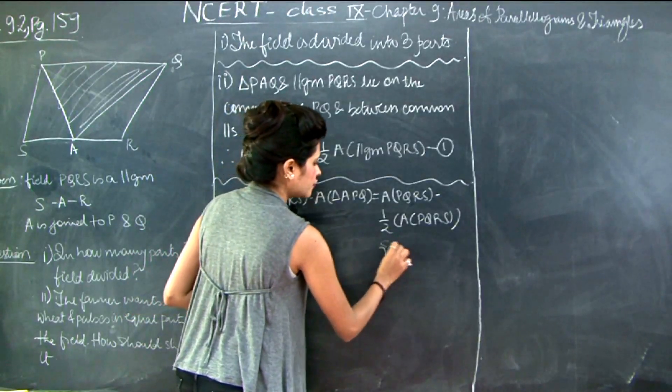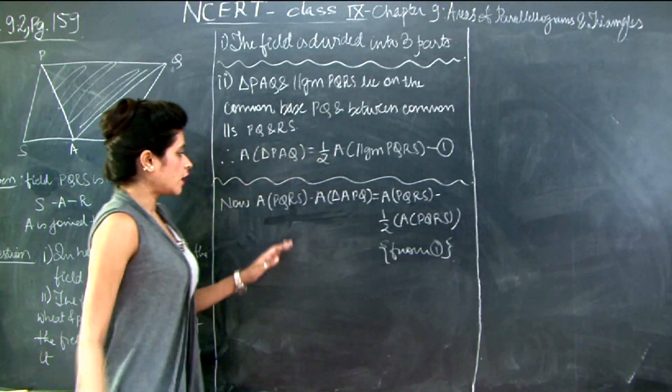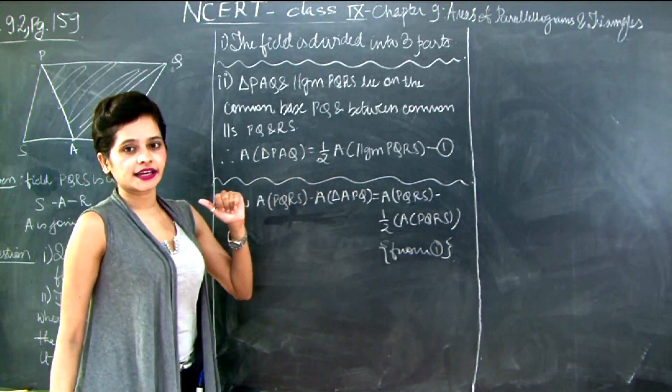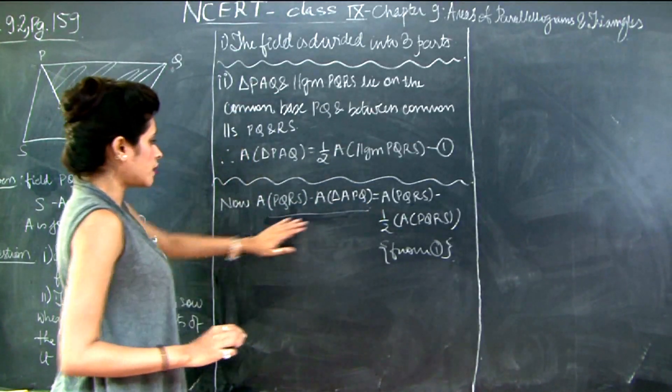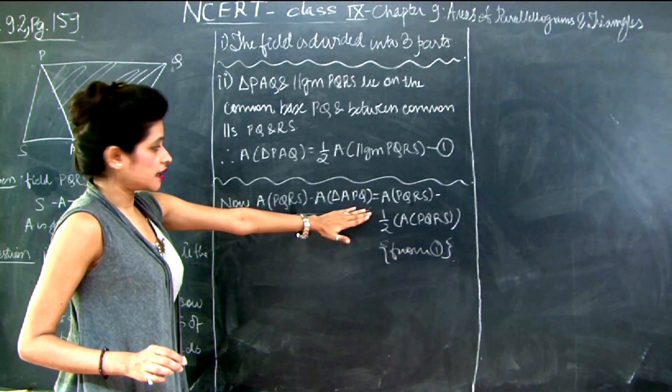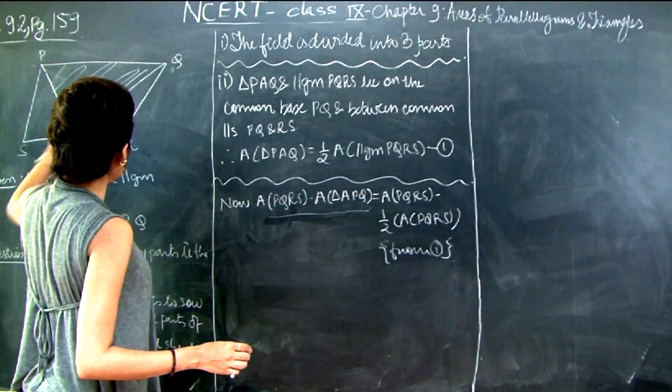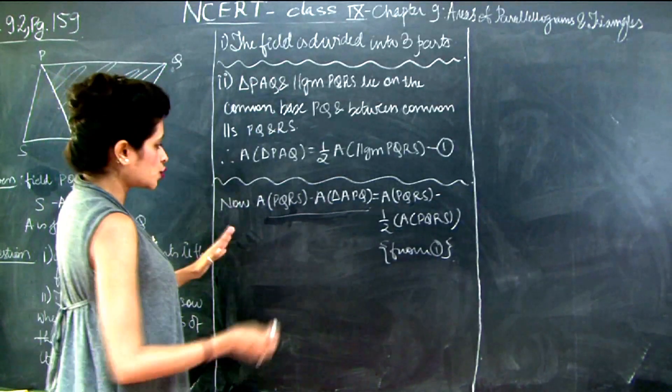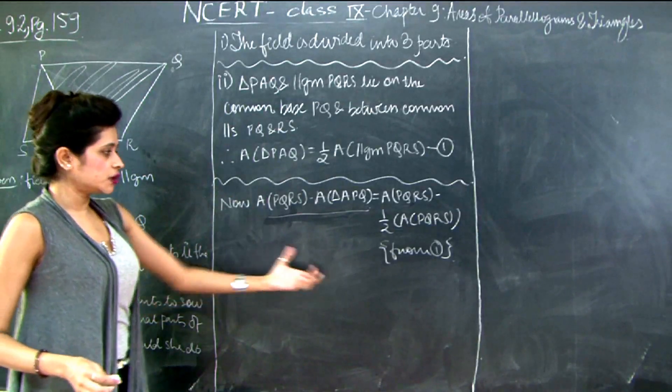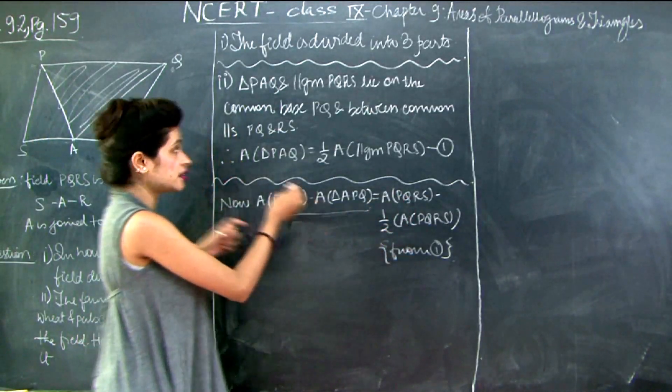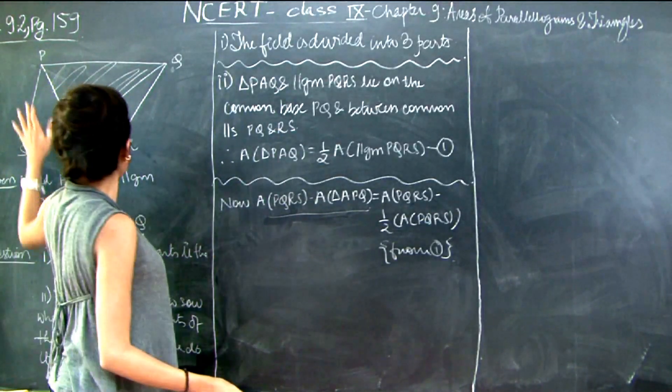From equation 1. Now why did I take area of PQRS minus area of APQ on my left hand side? This is the catch - because when I subtract triangle APQ from parallelogram PQRS I am going to get the triangles PAS and QAR. So we have to somehow extract these two triangles into an equation with my entire parallelogram and the triangle APQ.